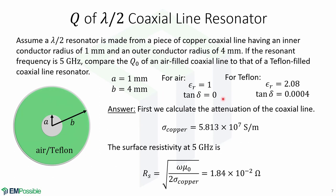Here are the properties for air: epsilon-r equals 1 and loss tangent equals 0. For Teflon: epsilon-r equals 2.08 and loss tangent equal to 0.0004. We first calculate the attenuation of the coaxial line. The conductivity for copper is given, and we calculate the surface resistivity at 5 GHz for copper, given by the square root of omega*mu-0 over 2*sigma, which gives this result.